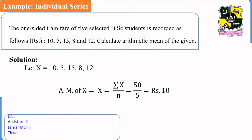Where x is 10, 5, 15, 8, 12 and small n indicates the number of observations, which is 5. So, adding all the terms and using the formula summation of x by n, summation of x is 50, n is 5. So, 50 by 5 equals Rs. 10.